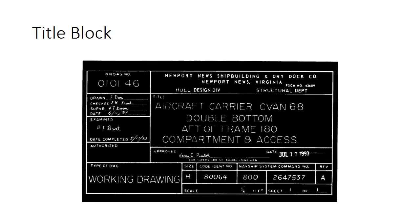Here's another example of a title block pulled from an old version of that Navy blueprint reading course. There's all kinds of information on here. If you know how to read it, there's a lot of power in this block. It tells us what it is — the title: aircraft carrier, double bottom, aft frame 180, compartment and access. It tells us the type of drawing, who authorized it, revisions, and scales.